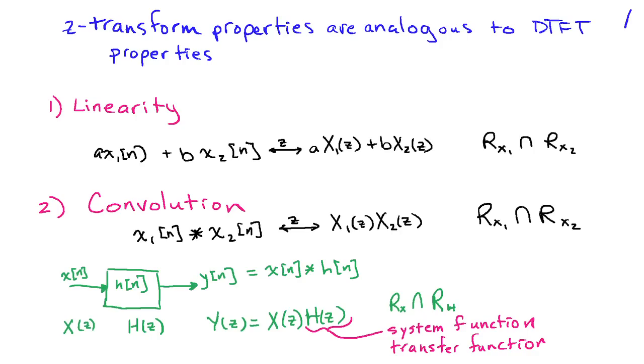This convolution property leads us to an interpretation of the Z-transform in terms of systems. If I have an input X of n to a linear time invariant system with impulse response H of n, my output is Y of n as the convolution of X with H. If I take these signals into the Z-domain, I have X of Z, and then my impulse response converts to H of Z, and we see that Y of Z is the product X of Z times H of Z. H of Z is known as the system function or the transfer function of the system.